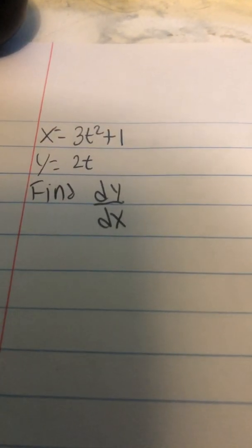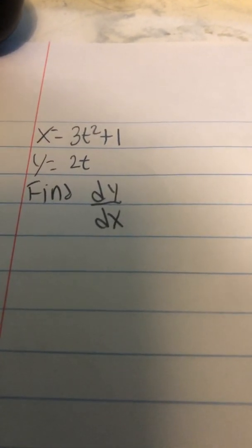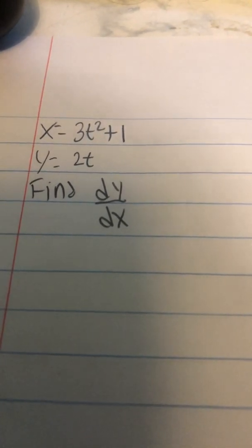Okay, so I'm going to try to do this very fast. x equals 3t squared plus 1, y equals 2t, find dy dx.